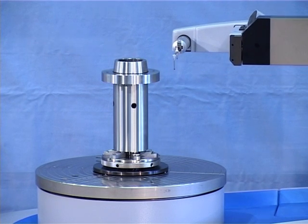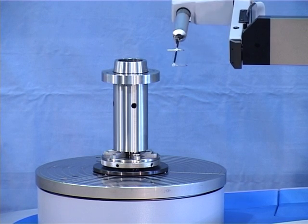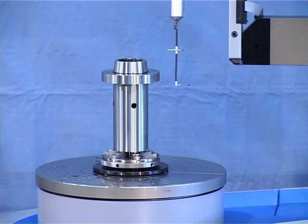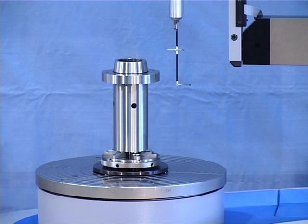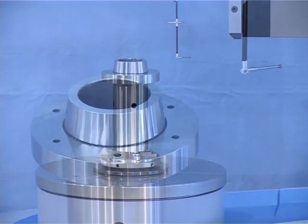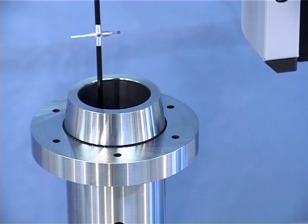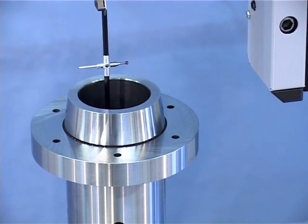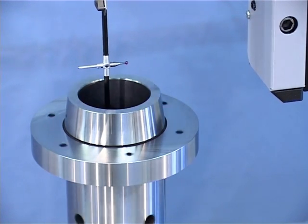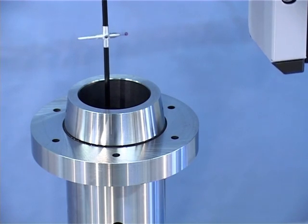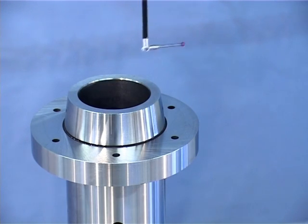Hommel-RoundScan meets complex tested measuring requirements of close to production metrology at the highest level. For close to production applications, an active damping system and an adapted housing are available. In addition, the long years of experience in the implementation of workpiece-specific measuring tasks has been included in the development of this new generation of measuring instruments.